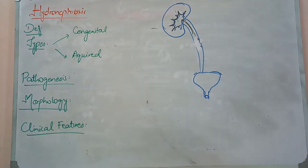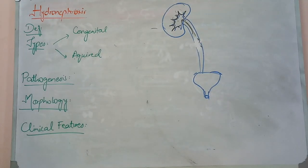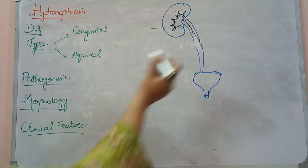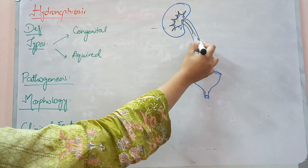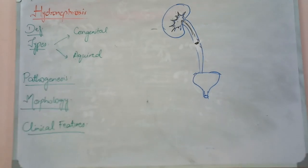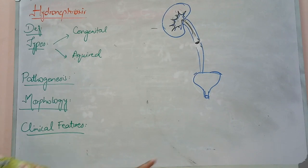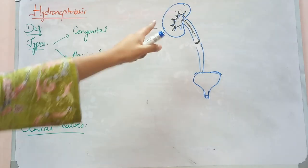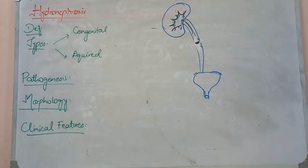But the more common cause is the acquired cause. What are acquired causes? The most common thing is a foreign body — foreign body meaning a stone. If a stone becomes lodged in the ureter, there will be an obstruction and hydronephrosis will develop.